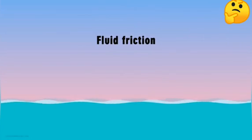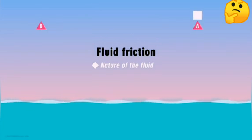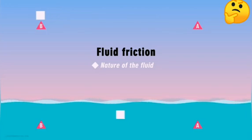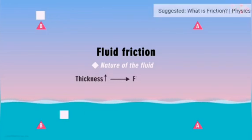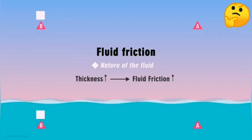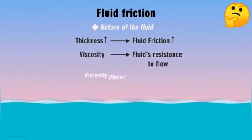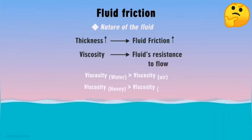What does fluid friction depend on? The first factor is the nature of the fluid. An object moves from point A to B through air; a similar object travels from A to B through water — which encounters more resistance? Clearly, water. More the thickness of the fluid, greater will be the frictional force. There's a term which describes a fluid's resistance to flow — it's called viscosity. Water is more viscous than air. Higher the viscosity, more will be the resistance offered by that fluid. Honey is more viscous than water, which is why it offers more friction than water. That was the first factor — the nature of the fluid.